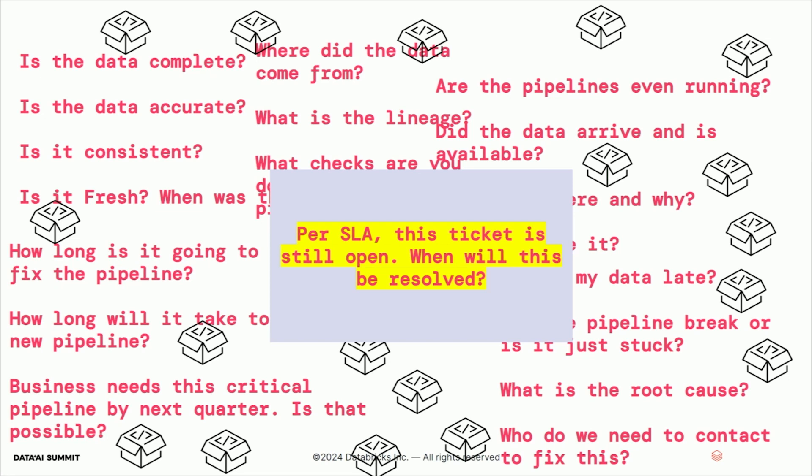What is the entire point of managing a whole data pipeline and validating it if the business or data consumers aren't even using it because they don't trust it? And my favorite question: per SLA, the ticket's still open. How long is that going to take — to answer the ticket, to certify a new pipeline, if we have another petabyte of data?